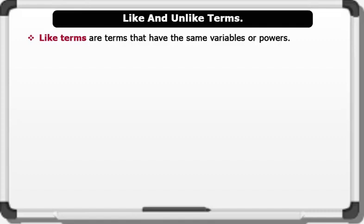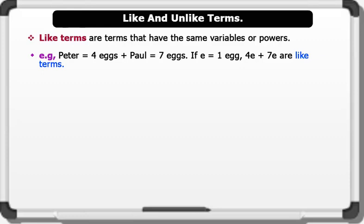Like and unlike terms. Like terms are terms that have the same variables or powers. For instance, Peter has four eggs and Paul has seven eggs. If E represents one egg, then 4E plus 7E are called like terms because they represent same variable E.